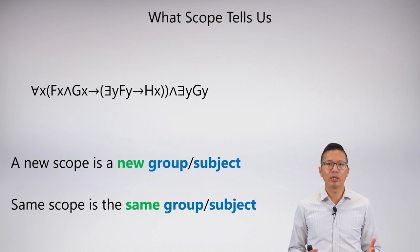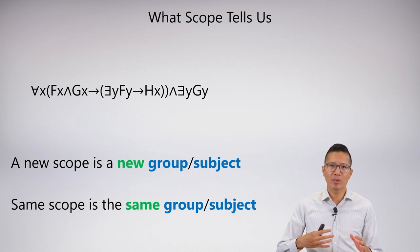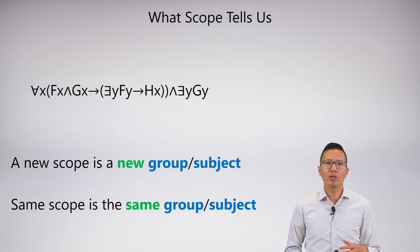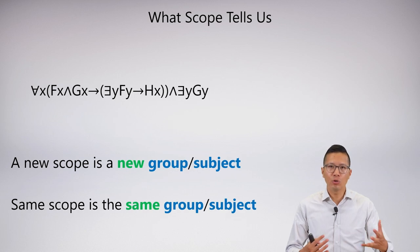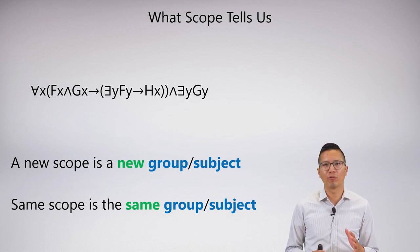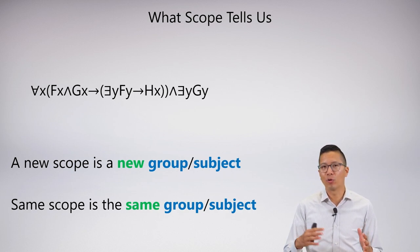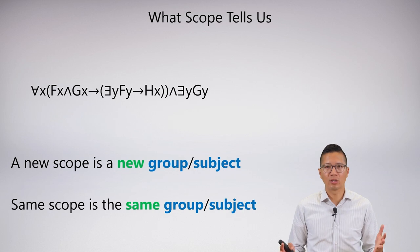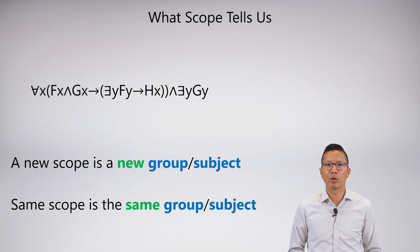The answer is really all about scope. Scope tells us that certain things are talking about the same subject or a different subject. Whenever you have a new scope, think of it as a new group or subject. Whenever you have the same scope, it is necessarily the same group or subject. A new scope being a new subject is not a necessity — it could coincidentally be the same subject. But the same scope being the same group and subject — that's a necessary claim, and that's why it matters.